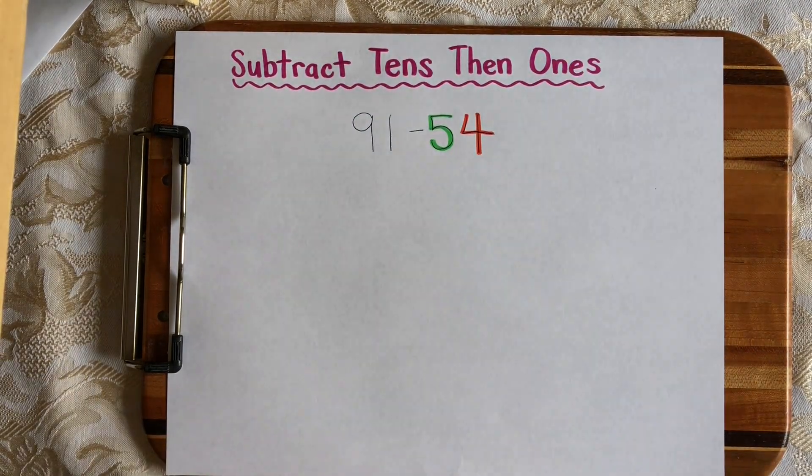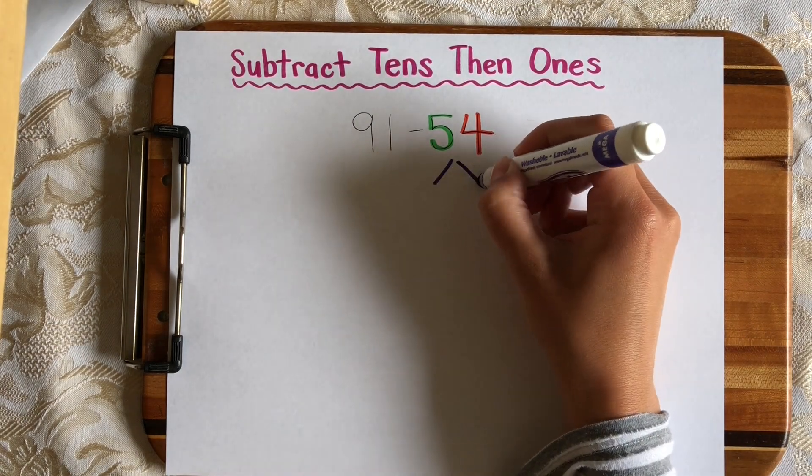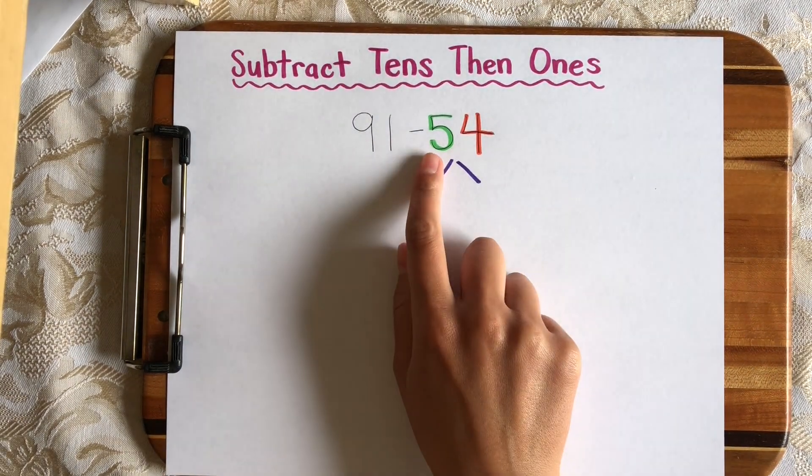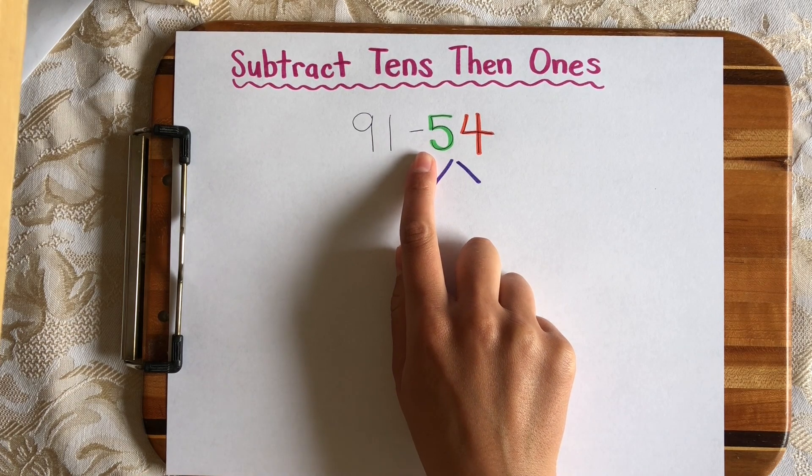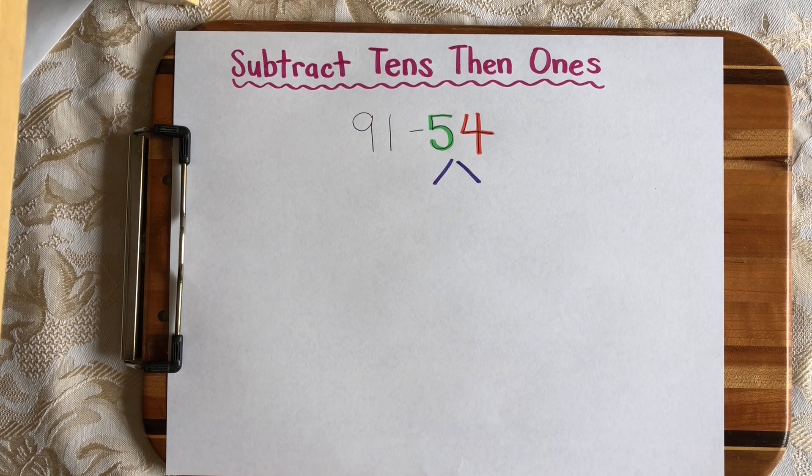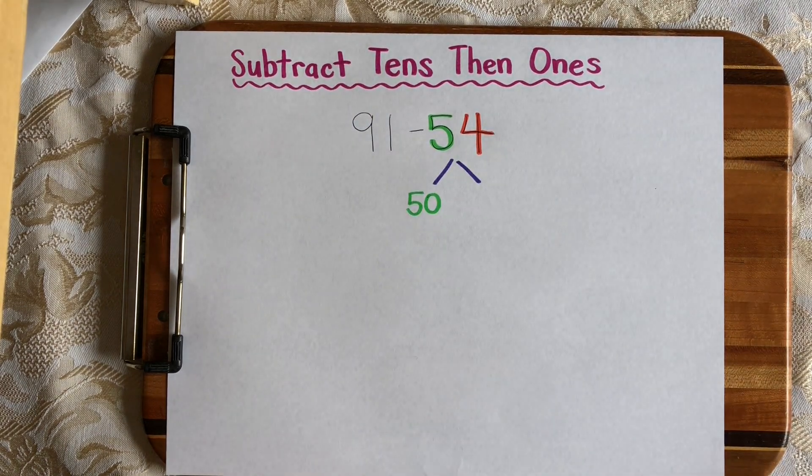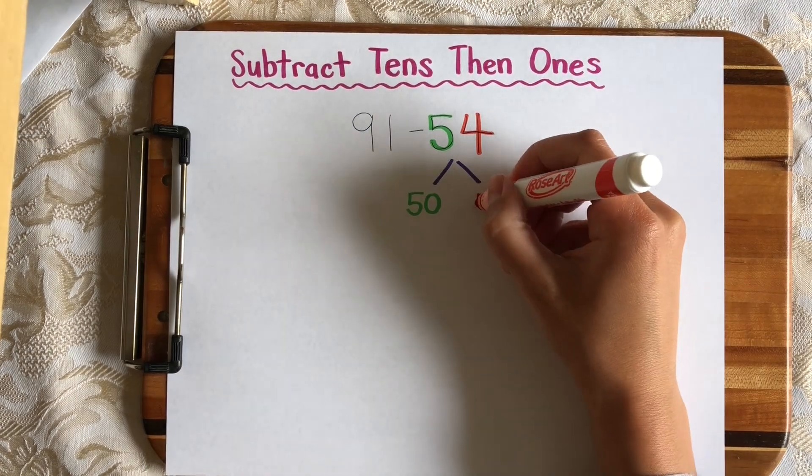So we are subtracting 54, which has 5 tens and 4 ones. And we're going to break apart that second number into 10s and 1s. There's a 5 here in the tens digit, but remember that isn't just a 5. It's actually 5 tens, which is 50. So if I split 54 into 10s and 1s, it's 50 and 4.